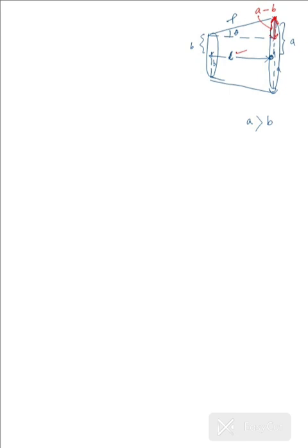For the angle theta, in the triangle we can see that tan theta equals the perpendicular over the base, which gives us tan theta = (a − b) / L.